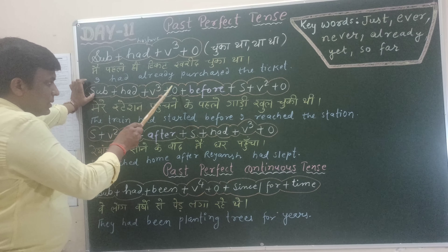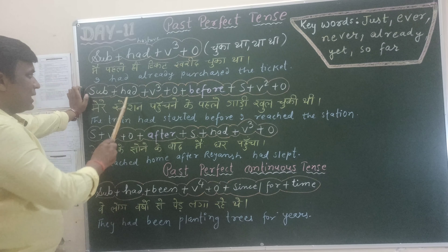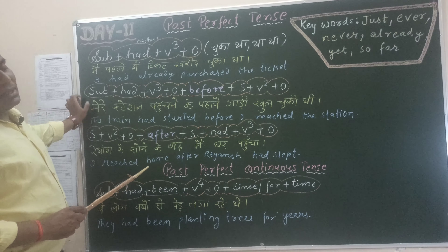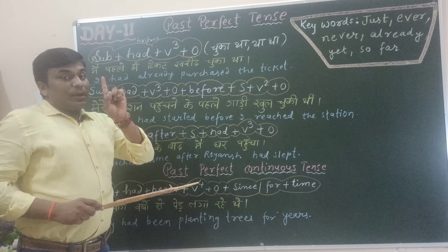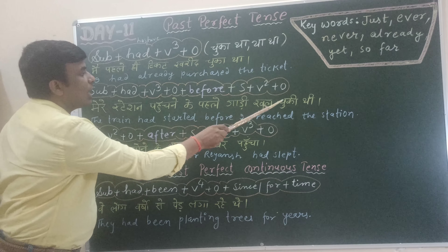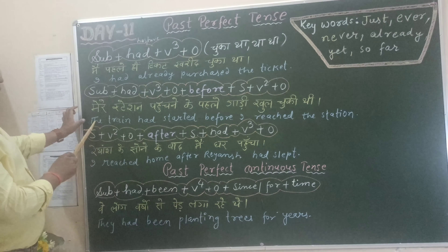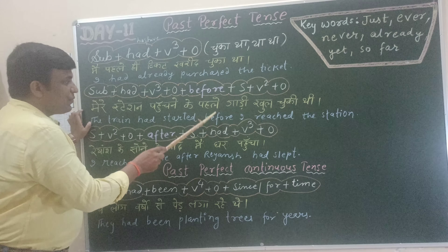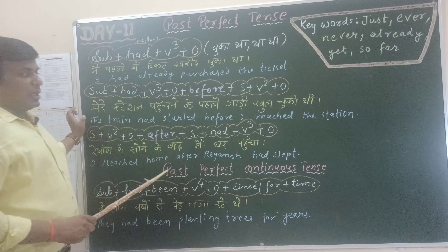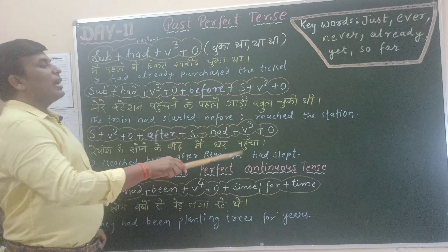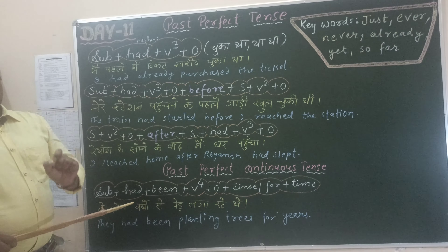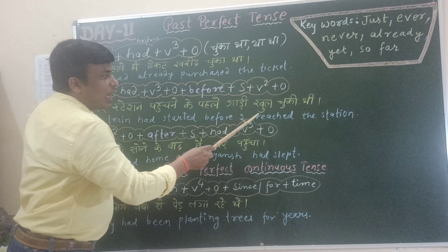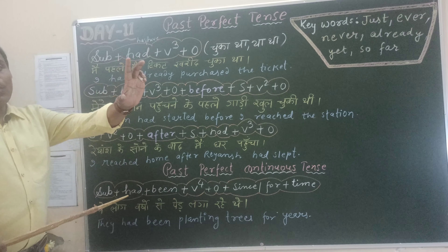For example: मेरे station पहुँचने के पहले गाड़ी खुल चुकी थी — the train had started before I reached the station. Note: arrived is followed by 'at' — arrived at the station — but reached doesn't take any preposition. So: the train had started before I reached the station.